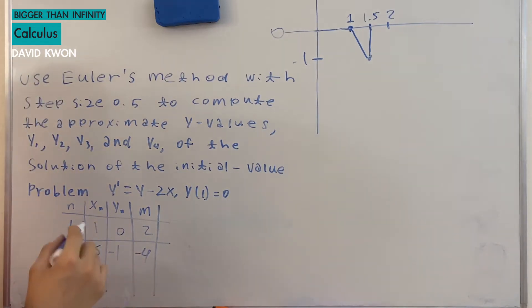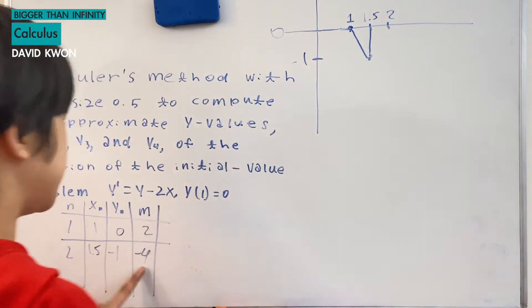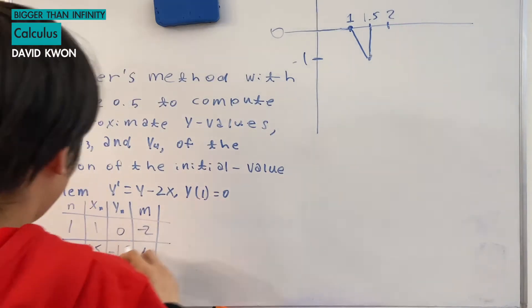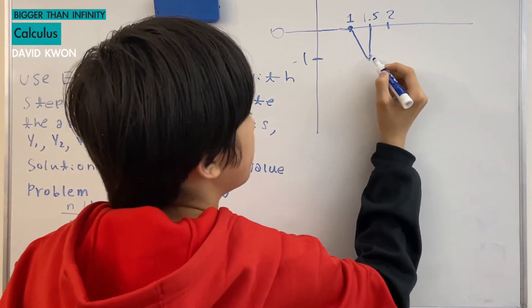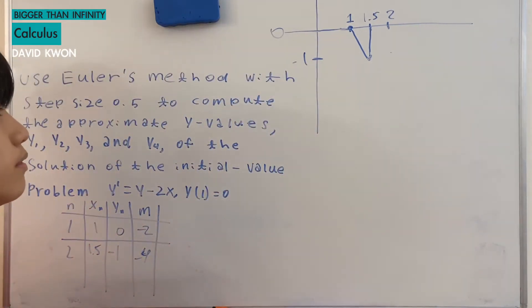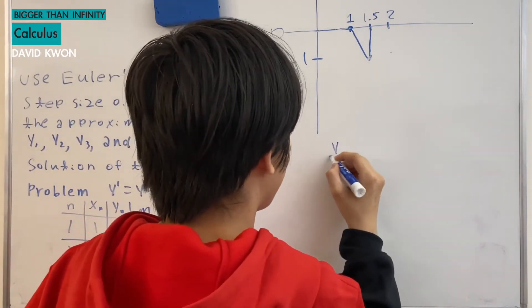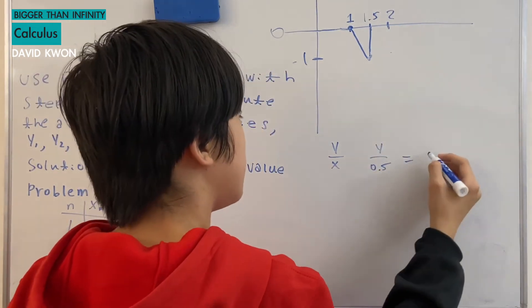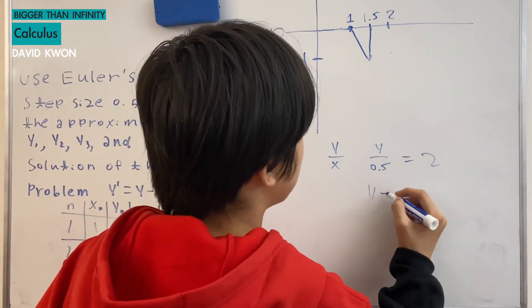Okay so now another step size is 0.5. So we went 0.5 which is at 2 and the slope is negative 4. So we went 0.5 up to here and the slope is negative 4 starting from here. So negative 4 when we went here. Okay so when 0.5 went on the x-axis the slope is y over x and x is equal to 0.5. Y is unknown and this value is negative 4. Okay we multiply 0.5 up to there. Okay then we just get y is equal to negative 2.